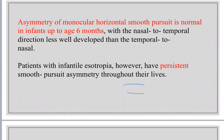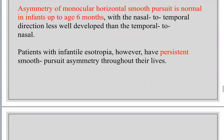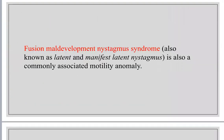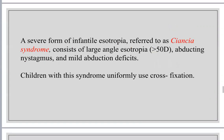The ICO question involved asymmetry when moving the optokinetic nystagmus drum from nasal to temporal — that was the correct answer. Fusion maldevelopment nystagmus syndrome is the other name for manifest latent nystagmus. This nystagmus is manifest but with low amplitude and low frequency. After you cover one eye and disrupt binocularity, the nystagmus increases in amplitude and frequency.